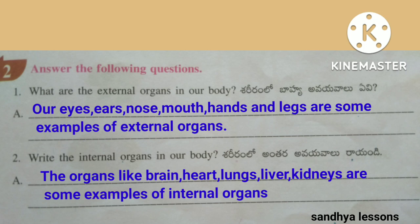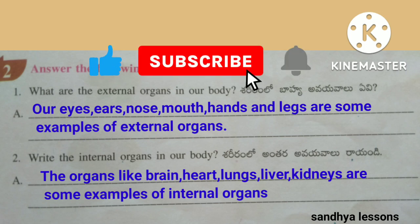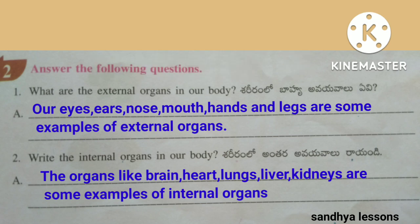Second question: Write the internal organs in our body. The organs like brain, heart, lungs, liver, and kidneys are some examples of internal organs.